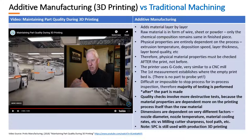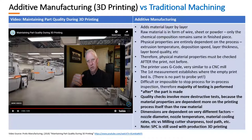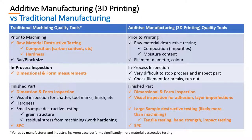The quality checks in 3D printing involve more destructive testing. They do dimensional testing of finished parts, but as you saw in the video, there are more destructive tests on printed parts. Here is a quick side-by-side comparison: prior to machining, there's fair reliance on raw material destructive testing. In-process inspection is fairly common in traditional machining, whereas in additive manufacturing it's much more difficult, so we rely much less on it.